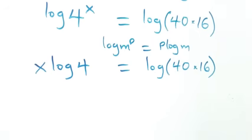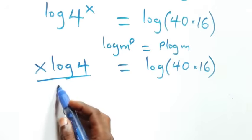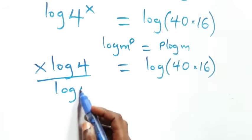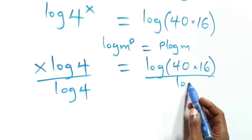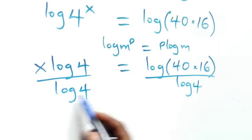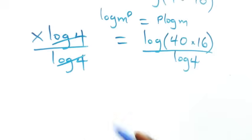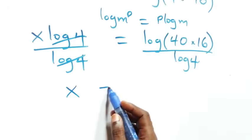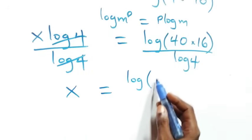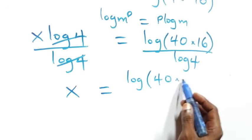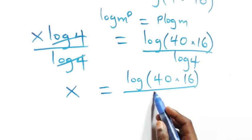Next step, we divide both sides by log 4. This side divided by log 4 and also this side divided by log 4, which implies log 4 cancels with each other. And we have x left, which is equal to log of 40 times 16 over log 4.